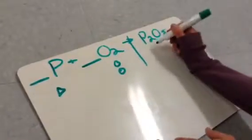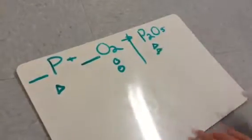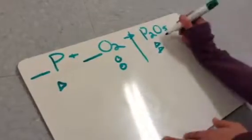We have two phosphorus on this side, and we have five oxygens.